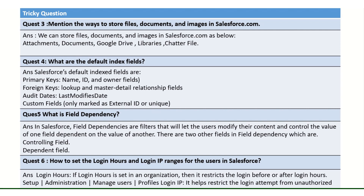The fifth question: what is field dependency? One field is the controlling field and the other is the dependent field. Based on the controlling field value — for example, if you choose Asia, you will get countries like India, Pakistan, Sri Lanka. If you choose Europe, you will get countries like Finland, Denmark, Sweden. So based on what the controlling field value is, the dependent field options change — that is field dependency.